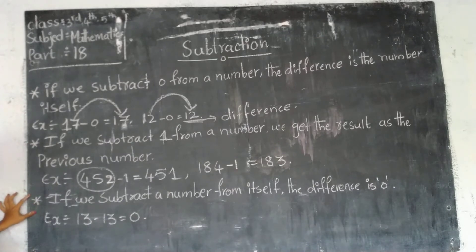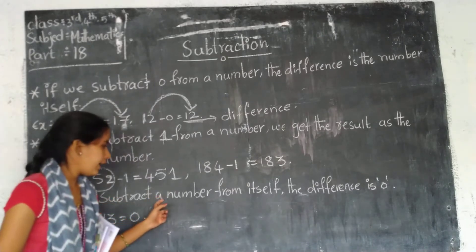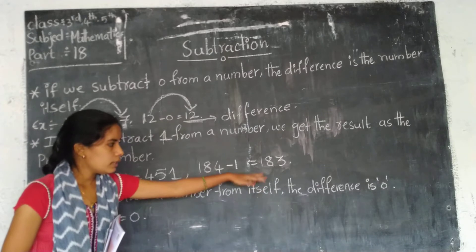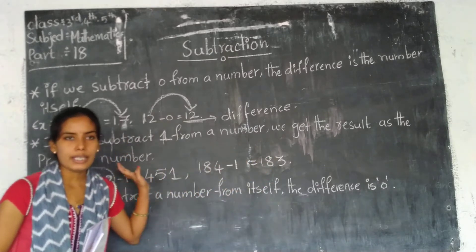And the third property: if we subtract a number from itself, the difference is 0.